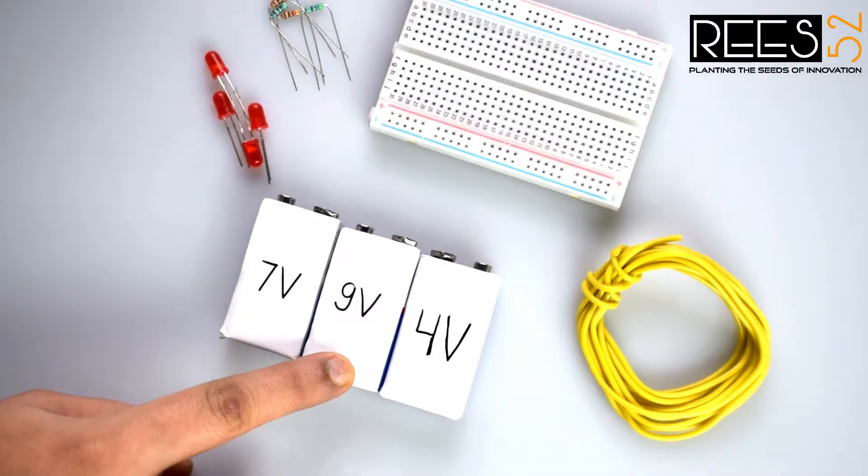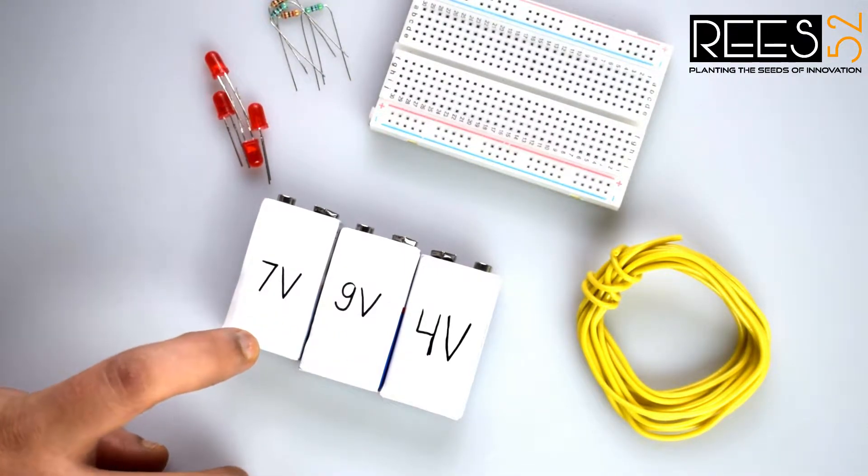This is a 9 volt battery that is fully charged. The others are less charged - one has 4 volt and another one has 7 volt. So let's get started.